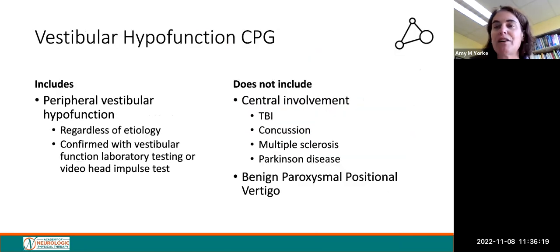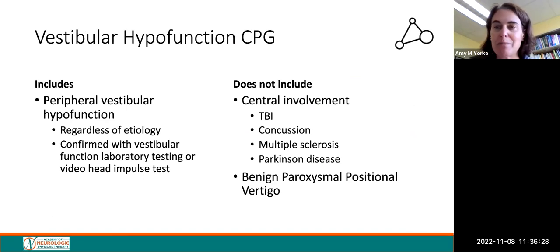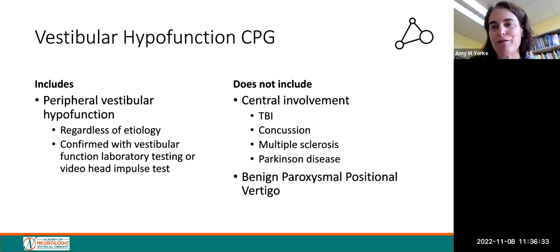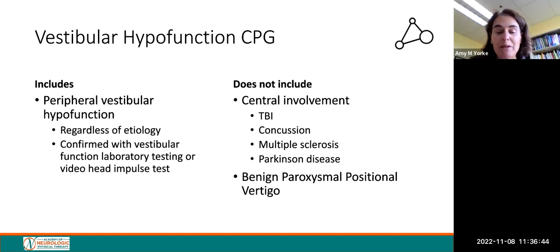It's important to understand what this clinical practice guideline includes. It covers patients that have peripheral vestibular hypofunction, no matter the etiology — whether it's vestibular neuritis or labyrinthitis — confirmed with vestibular function laboratory testing or video head impulse testing. This CPG does not include patients with disease due to central involvement such as brain injury, concussion, MS, Parkinson's disease, or BPPV.